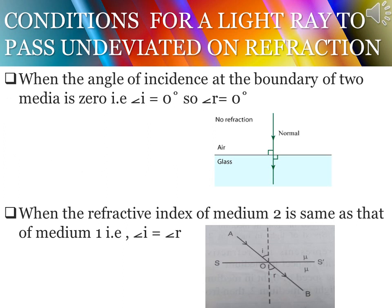Let us look at the conditions for a light ray to pass undeviated on refraction. A ray of light passes undeviated from medium 1 to medium 2 in either of two conditions: first, when the angle of incidence at the boundary is 0, meaning both the angle of incidence and angle of refraction are 0°; and second, when the refractive index of the second medium is the same as that of the first medium, in which case the angle of incidence equals the angle of refraction.